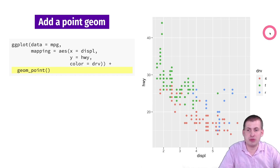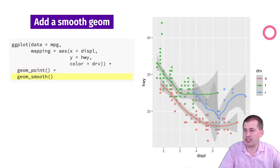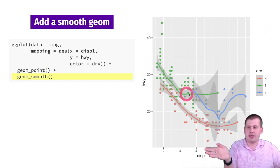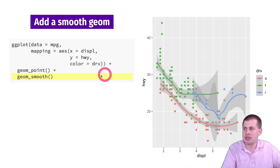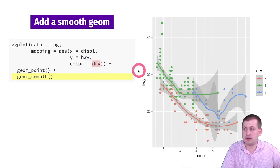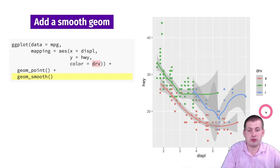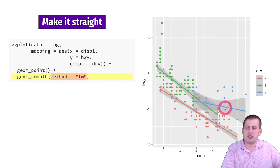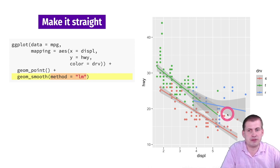Adding geom_point now shows displacement, highway, and drive all represented by points. We can actually add multiple geoms — adding geom_smooth on top gives a smooth line fitting the data for each drive type, because we've mapped color onto drive, so we get three different lines. If we want those lines to be straight linear models, we just add the method='lm' argument inside geom_smooth.